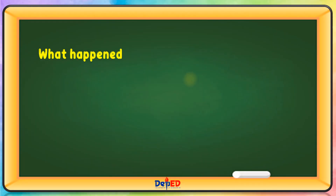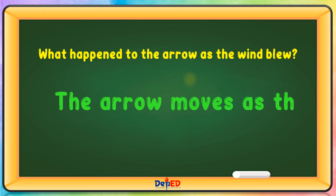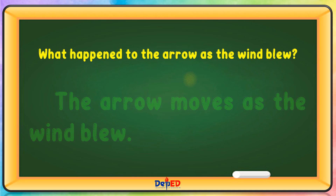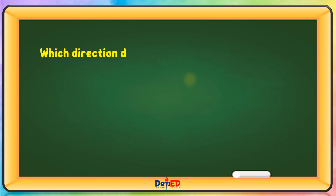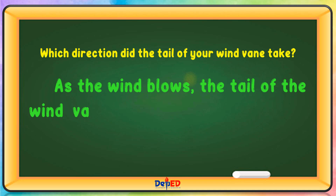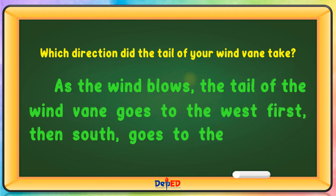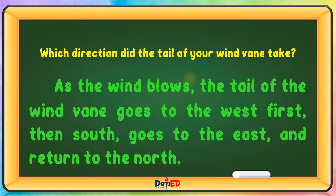What happened to the arrow as the wind blew? The arrow moves as the wind blew. Which direction did the tail of your wind vane take? As the wind blows, the tail of the wind vane goes to the west first, then south, then to the east, and returns to the north.